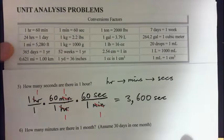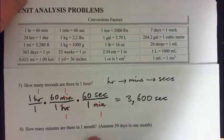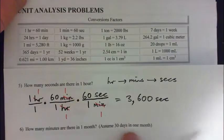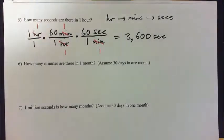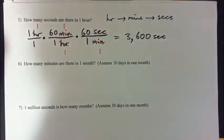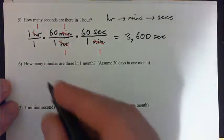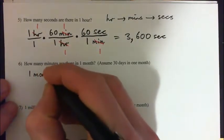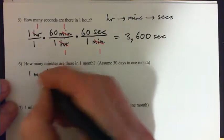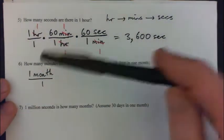Let's move on to question 6: how many minutes are there in one month? We're going to assume there are 30 days in one month. You can press pause and try it, then check the video. We write down what we have — one month over 1 — and we want to convert to minutes.